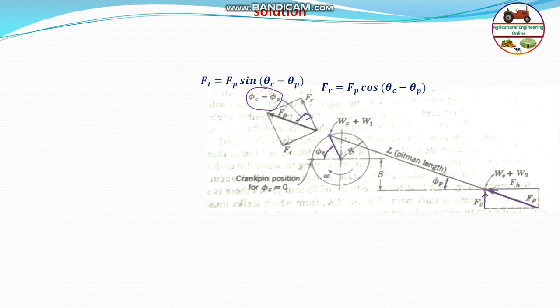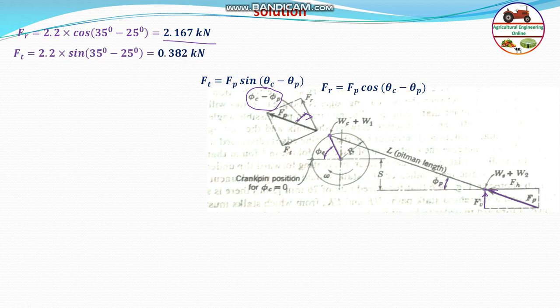Now let us calculate. F_r will be equal to F_p times cosine of (35 minus 25). F_p is given as 2.2 kN — that is the force along the pitman. Putting the values: F_r = 2.2 × cos(10°) = 2.167 kN. Similarly, the tangential force at the crank pin: F_t = 2.2 × sin(35 minus 25) = 2.2 × sin(10°) = 0.382 kN.